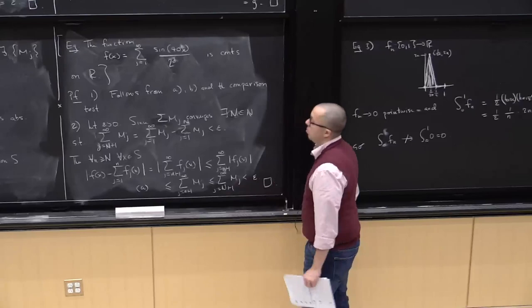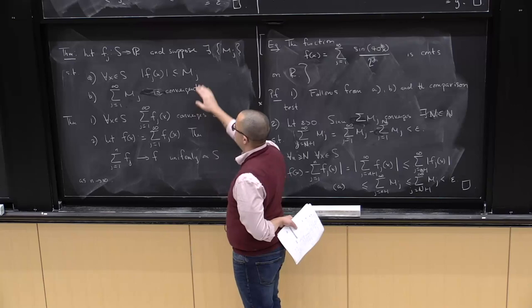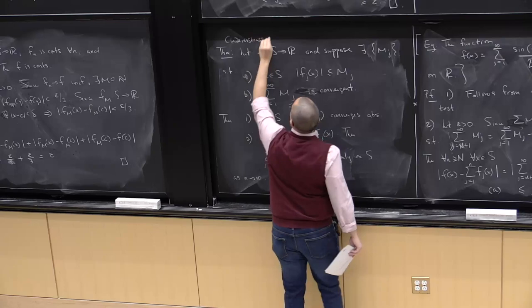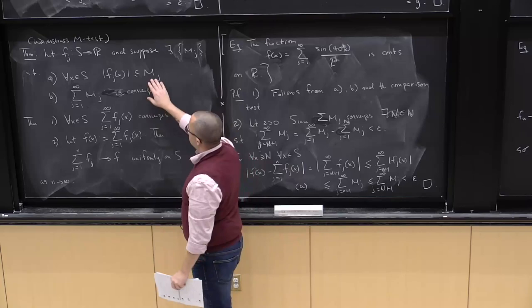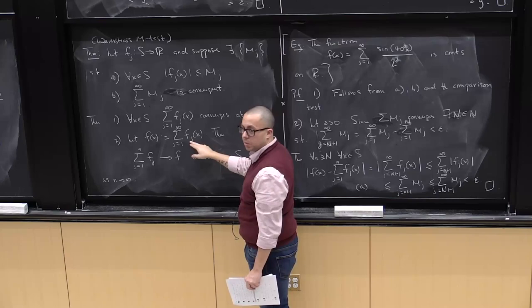This theorem is called the Weierstrass M-test — M because of the M_j's appearing in it. If I have a sequence of functions bounded by numbers M_j and those M_j's are summable, then the series of the functions converges uniformly. We'll stop there.